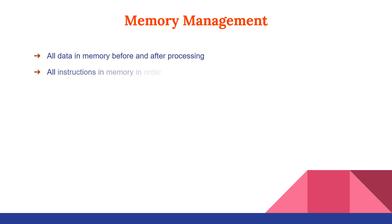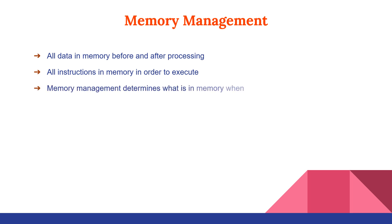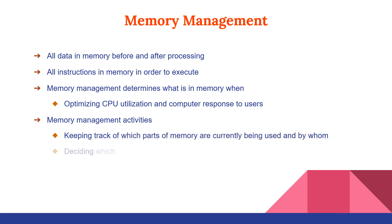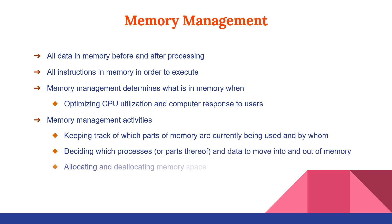All data must be in memory before and after processing, and all instructions must be in memory in order to execute. Memory management determines what is in memory when optimizing CPU utilization and computer response to users. Memory management activities include: keeping track of which parts of memory are currently being used and by whom, deciding which processes and data to move into and out of memory, and allocating and deallocating memory spaces as needed.